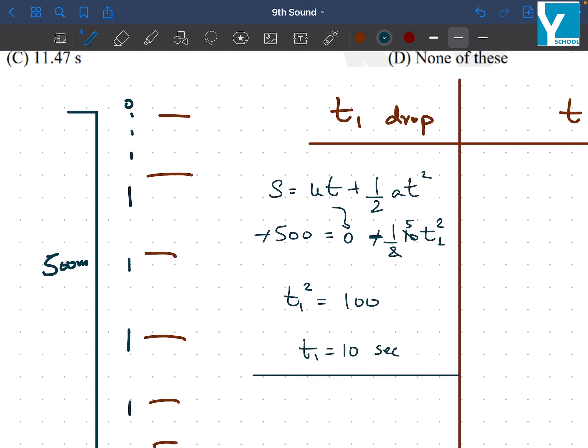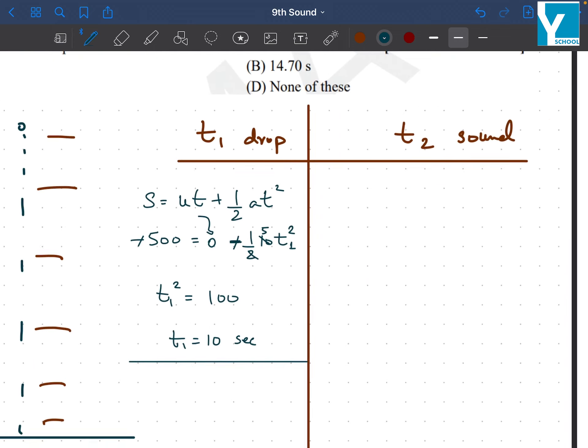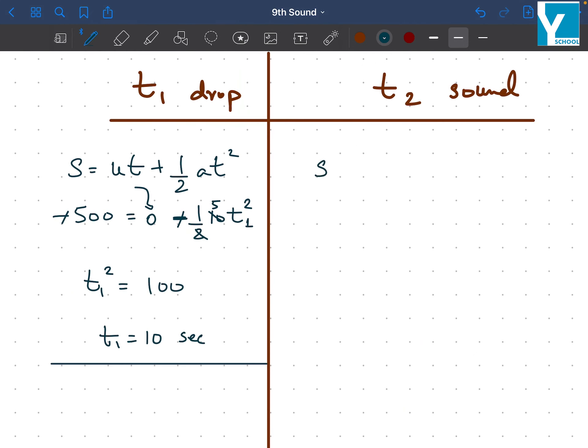So this is the first time t1, which is the required time for the fall. Now the sound will take its time to reach, and here we can write s equals vt because sound obviously has a constant velocity, no acceleration.